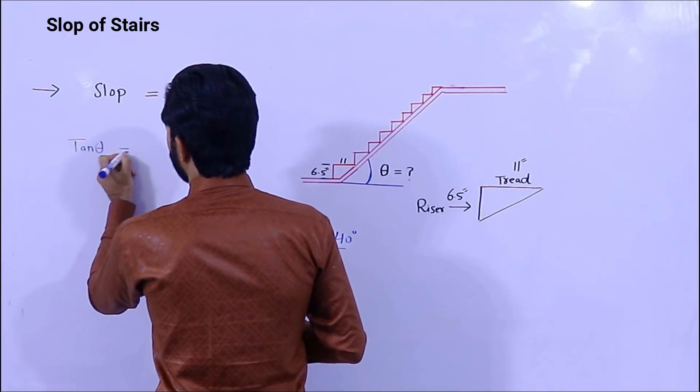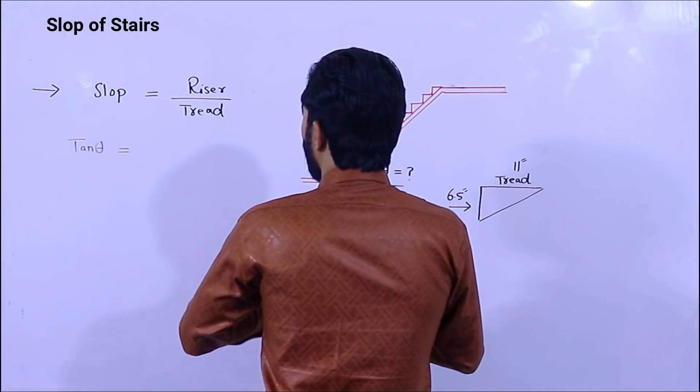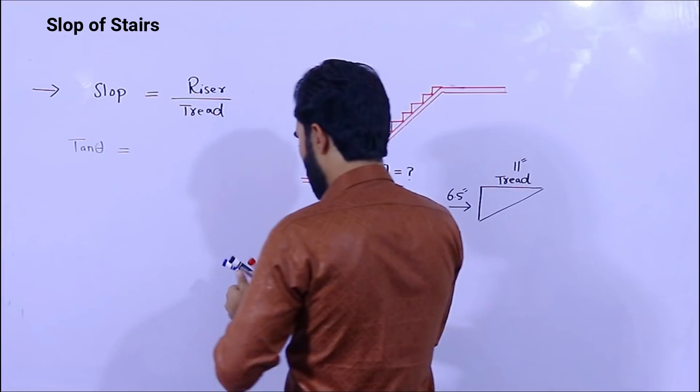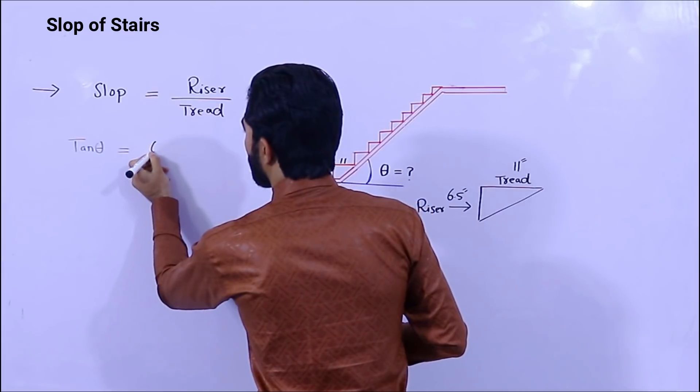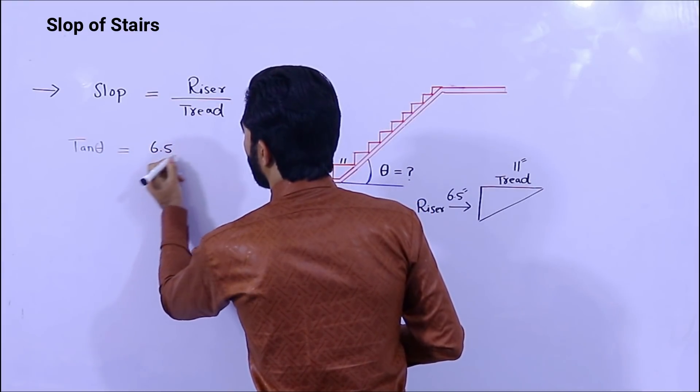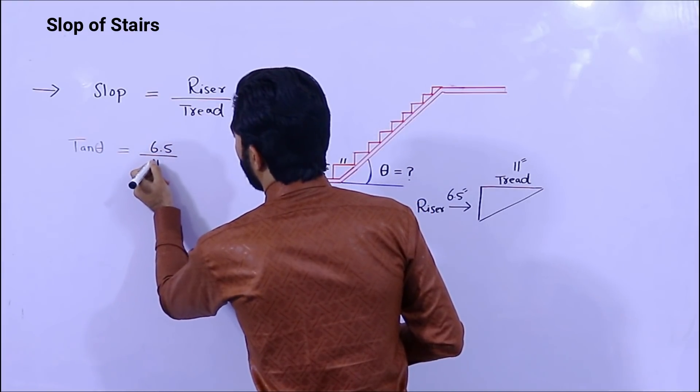Tangent theta is equal - riser is here, riser is 6.5 inches, so 6.5 inches divided by 11 inches.